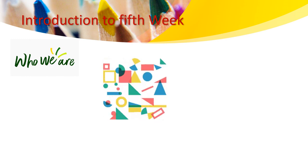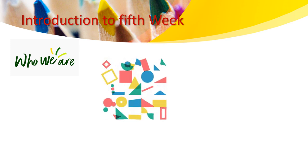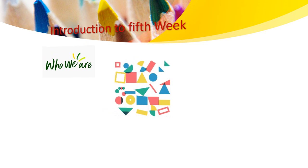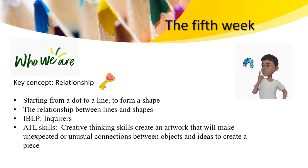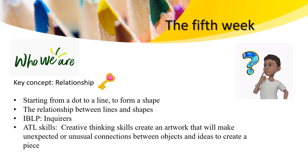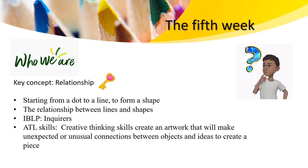We are still talking about the relationship between the shapes. If you look at the image below, what shapes do you see? The key concept we are still focusing on is relationship — starting from a dot to a line to form a shape. This class we will be focusing on the relationship between lines and shapes. Do you think KG2 learners, will there be a relationship between lines and shapes?